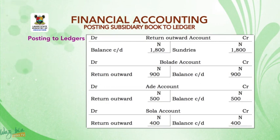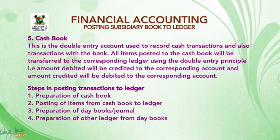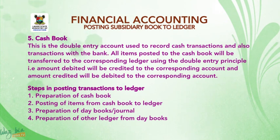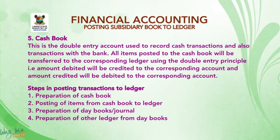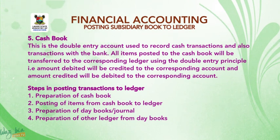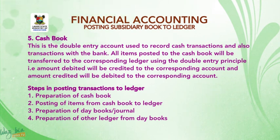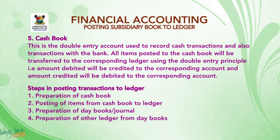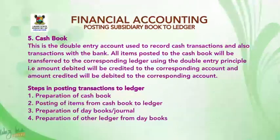Cash book, number five: this is the double entry account used to record cash transactions and also transactions with the bank. All items posted to the cashbook will be transferred to the corresponding ledger using the double entry principle — that is, amounts debited will be credited to the corresponding accounts, and amounts credited will be debited to the corresponding account.